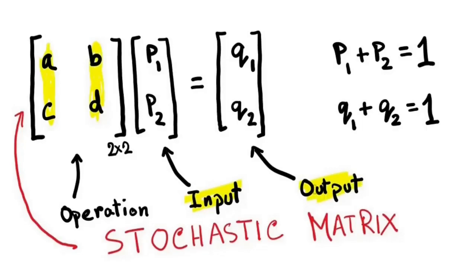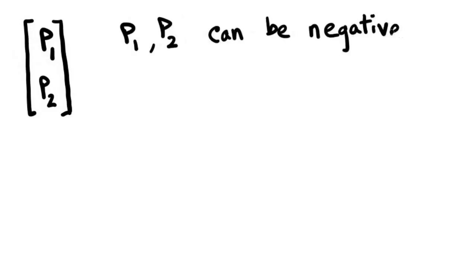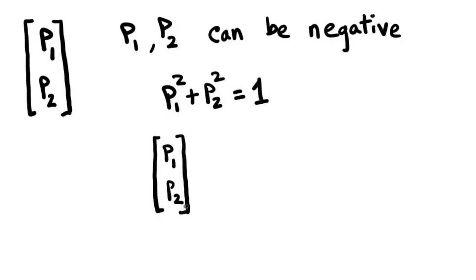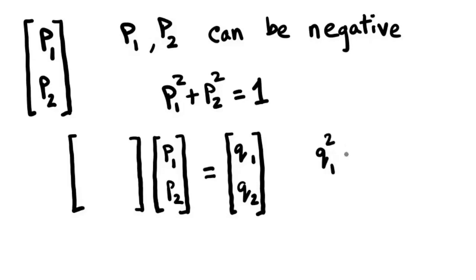So, where are the negative probabilities? Let's introduce them. Consider the vector p1, p2 again. But this time, p1 and p2 can take negative numbers, and p1 square plus p2 square has to be 1. Let's say, the matrix takes it to another vector, q1, q2. We no longer want q1 plus q2 to be 1. Instead, we want q1 square plus q2 square to be 1. What is the set of matrices that does this?